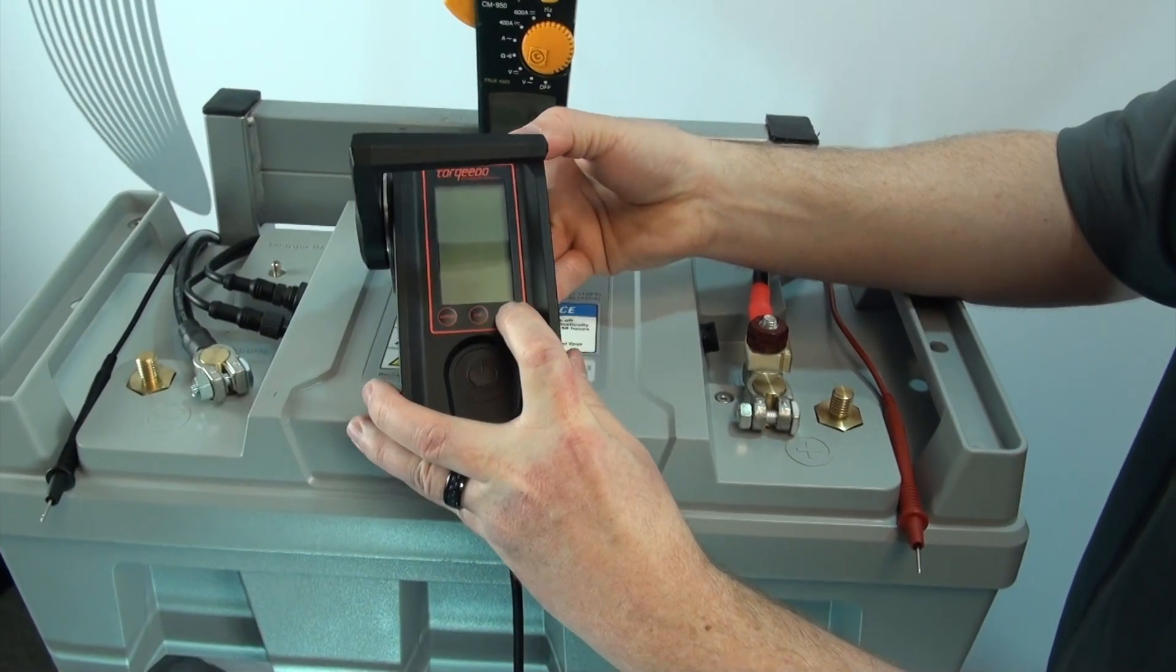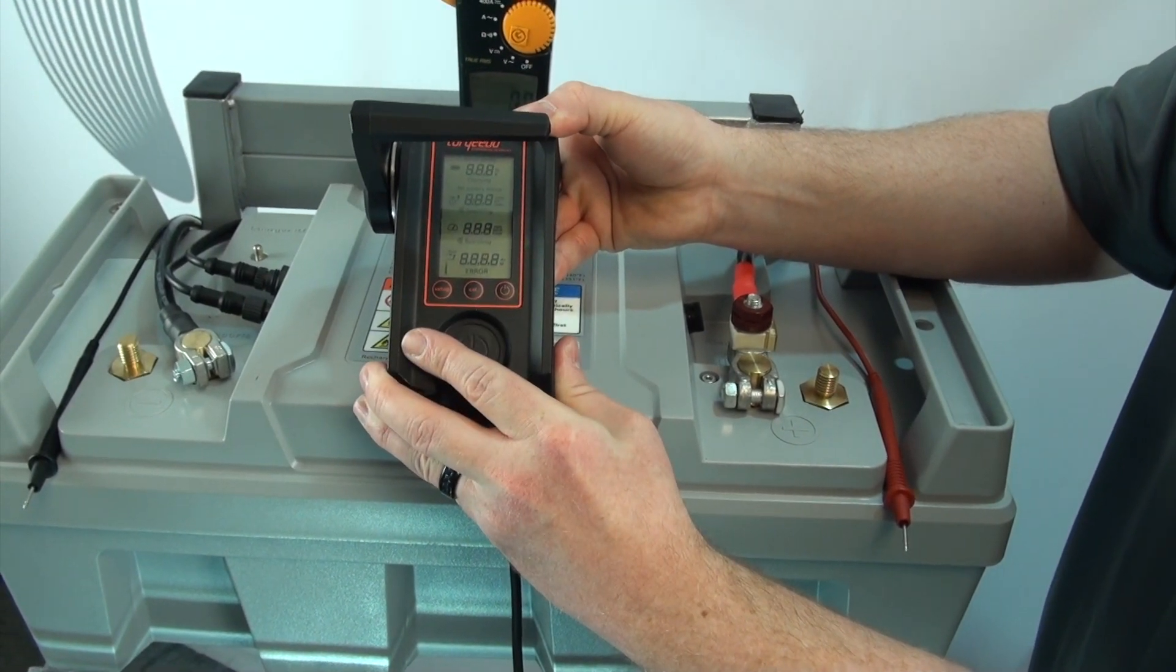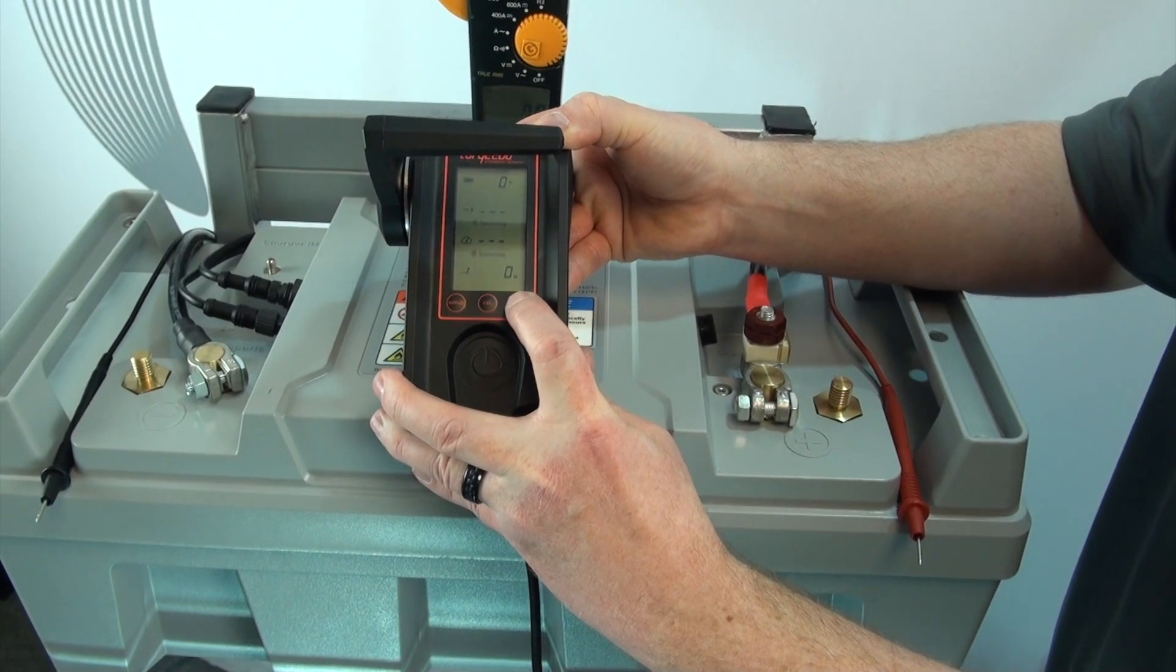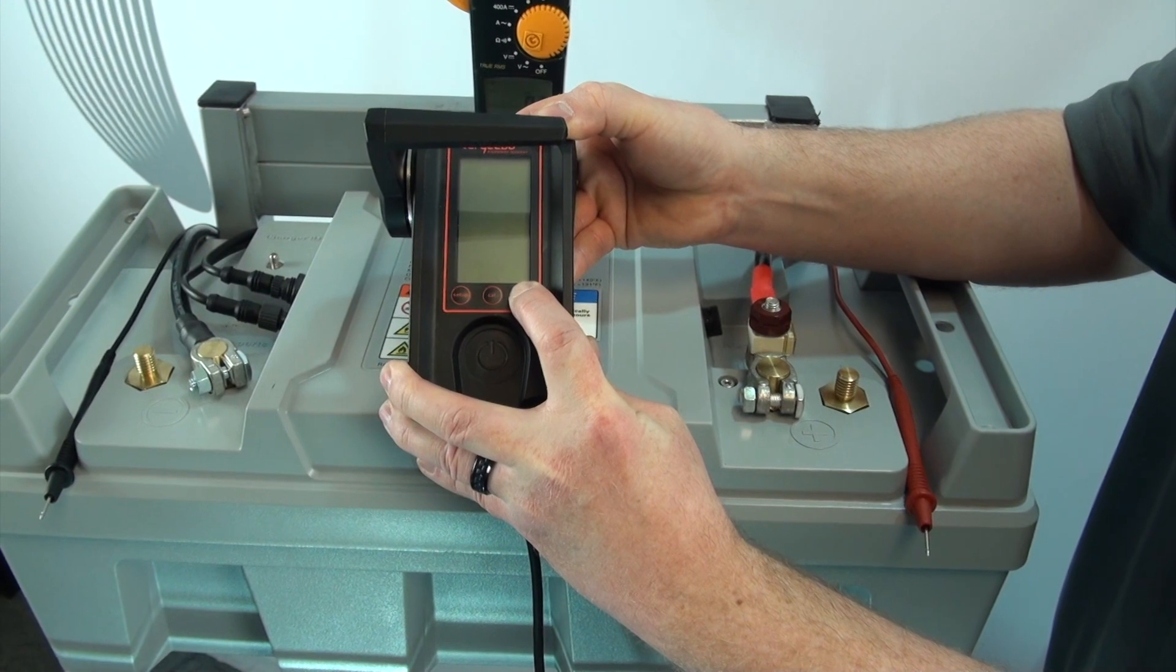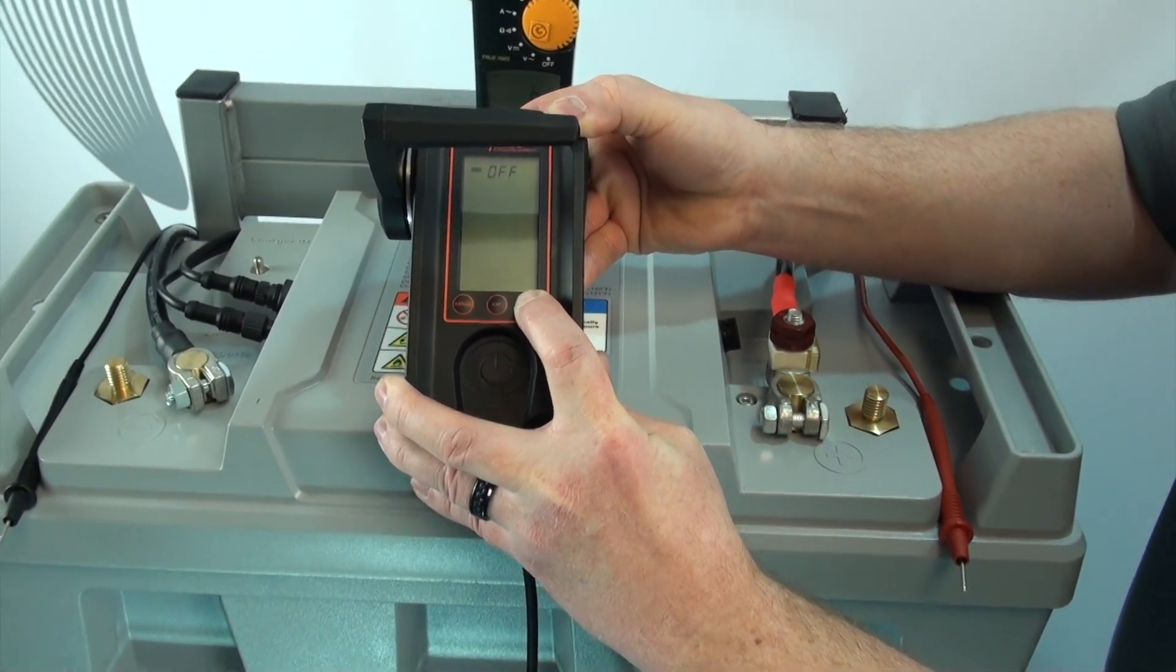So we'll go ahead and turn on the display. Now we're going to turn off the motor and the battery by holding down the power button until the off is displayed. There's the off. I'm going to release my finger.